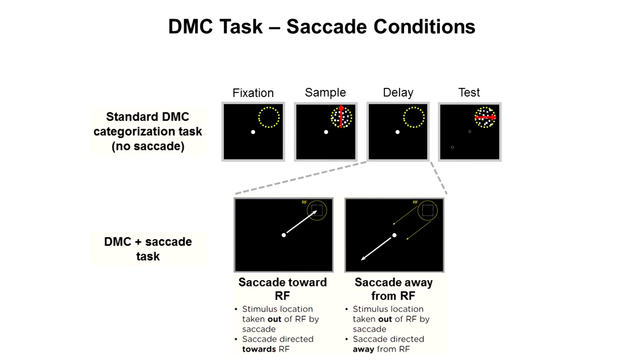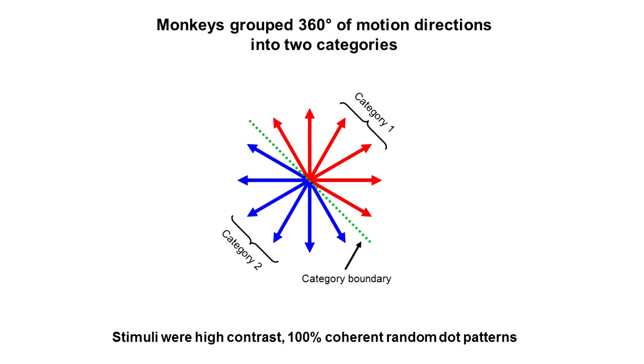Importantly, the monkey has no way to predict whether a saccade will be cued, and saccades had no relevance for solving the categorization task. Additionally, while the monkey was trained using many motion directions within each category, only four motion directions, separated by 90 degrees, were used as sample stimuli during recording sessions.